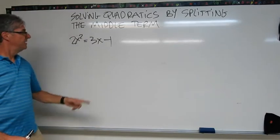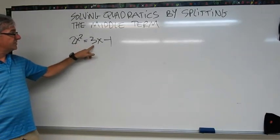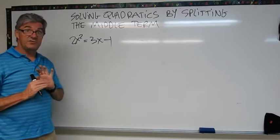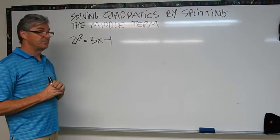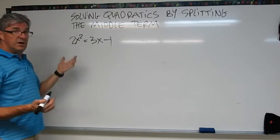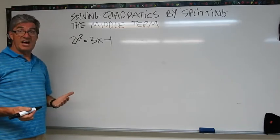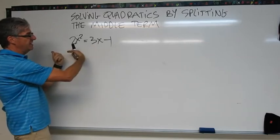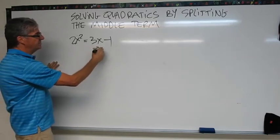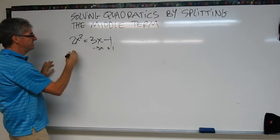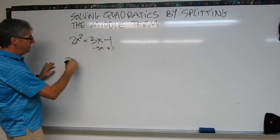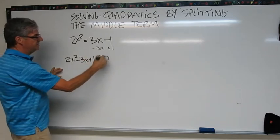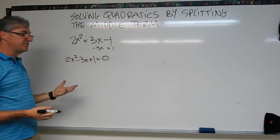Let's try another one. 2x² equals 3x minus 1. If you're feeling good, pause the video right now and see if you can do this problem. Let's take a look. My first step is to set one side equal to 0. So I'm going to move my 3x and my negative 1 over here by subtracting 3x from both sides and adding 1 to both sides. That's going to leave me with 2x² minus 3x plus 1 equals 0. So now I've taken care of that step.